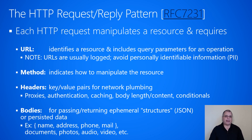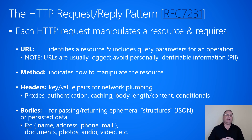The HTTP request-reply pattern is described in RFC 7231. Each HTTP request manipulates a resource on a service, and it requires these four things. The first thing is the URL. The URL identifies a particular resource on a service, and it includes query parameters to help fine-tune the behavior of a particular operation being performed. Note that URLs are usually logged for debugging and diagnostic purposes, so you want to avoid putting any personally identifiable information, or PII, in the URL if possible.